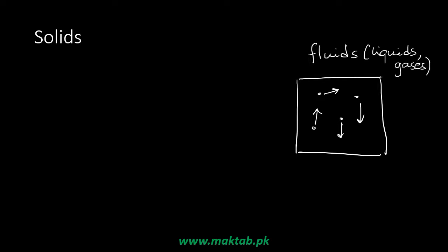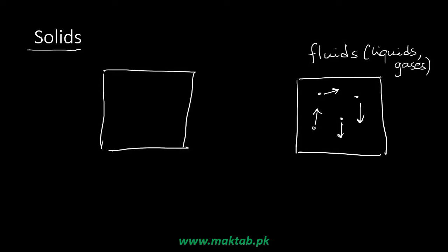Now we will discuss solids. A solid is a material in which atoms are in a special location and cannot be removed from that location, because in atoms there are electrical forces which we call bonds, which keep them fixed. Atoms vibrate around their mean position — simple to-and-fro motion.